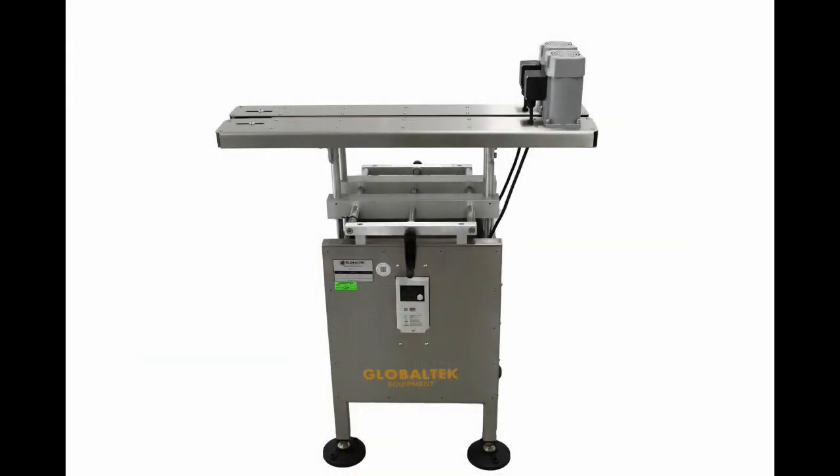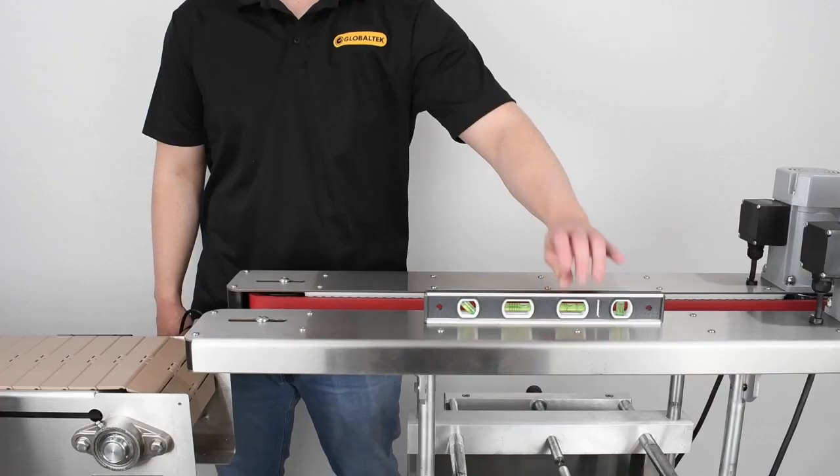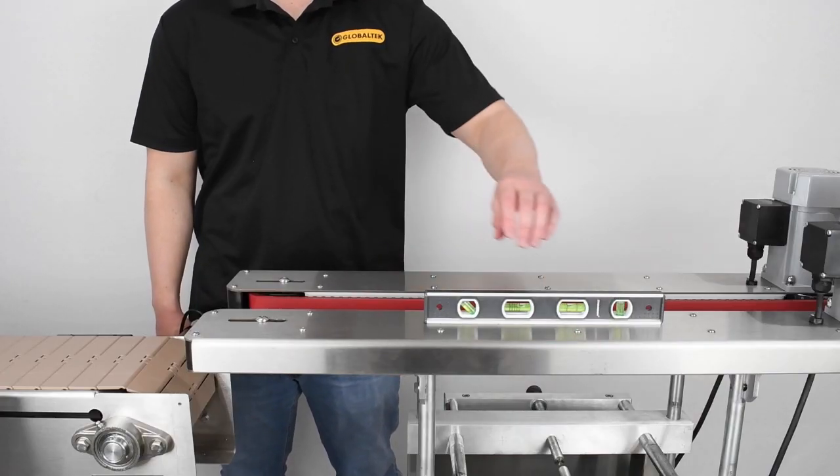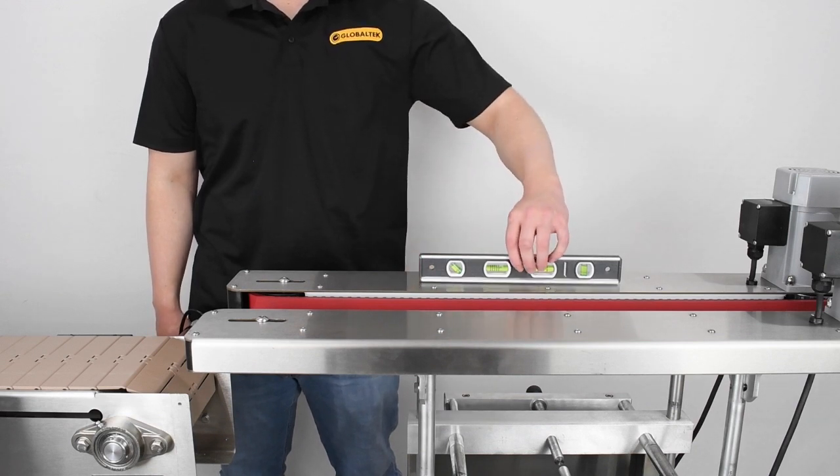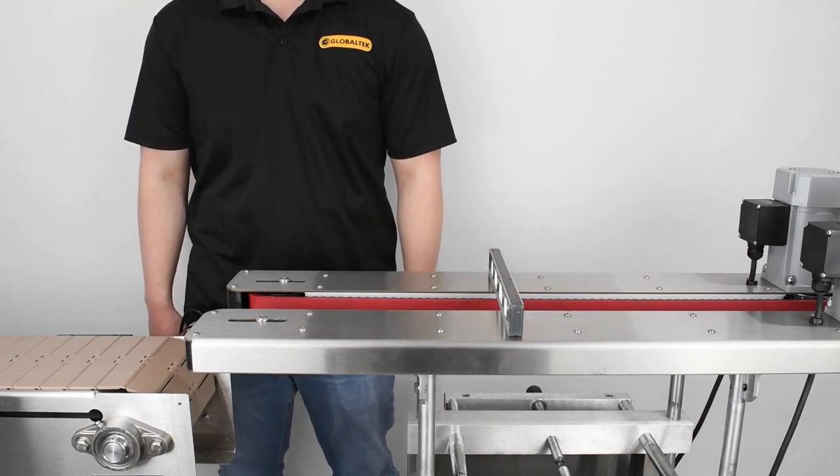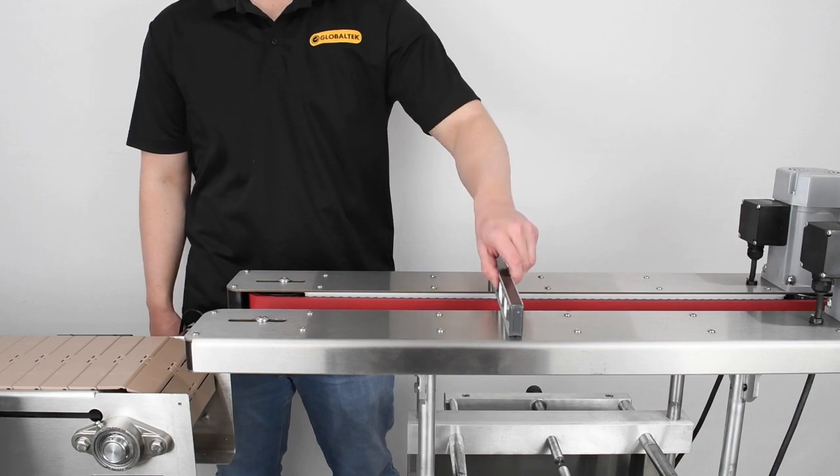We can finally level our bottomless conveyor. Place your level on each of the cassettes. Place the level across the cassettes as well. Get a sense for which of the legs of the bottomless conveyor need to be raised or lowered for a smooth surface.